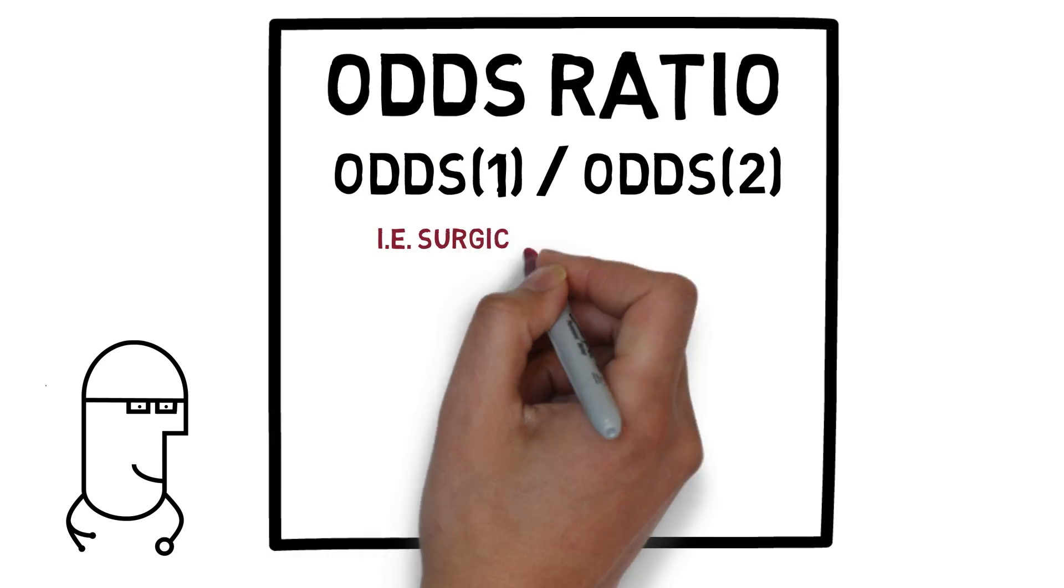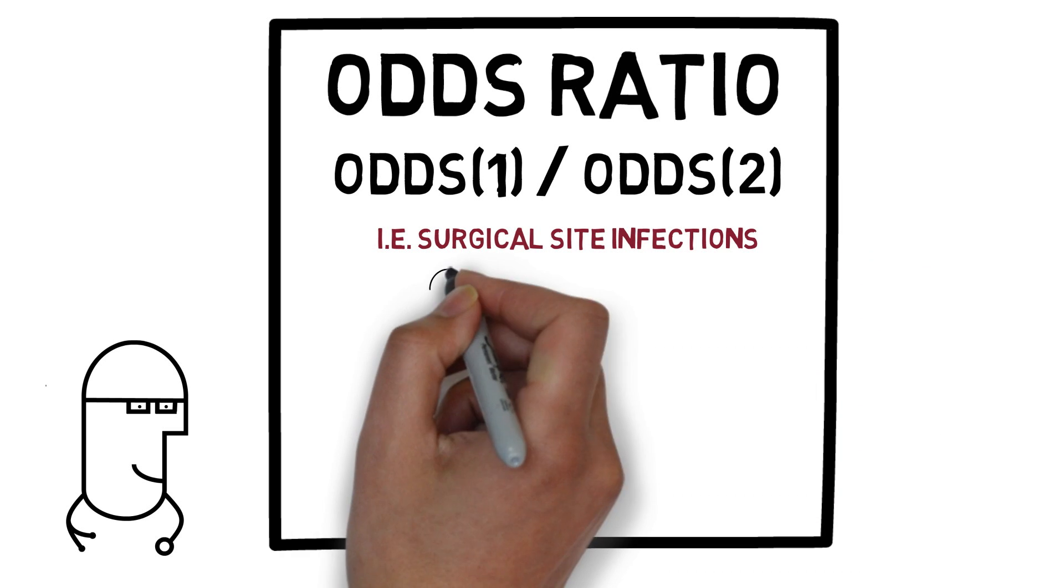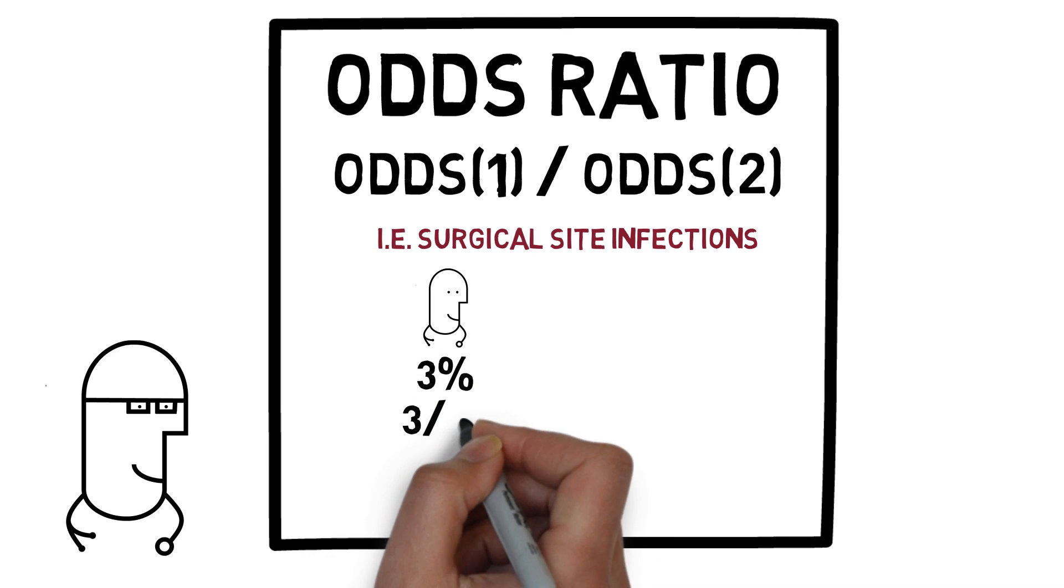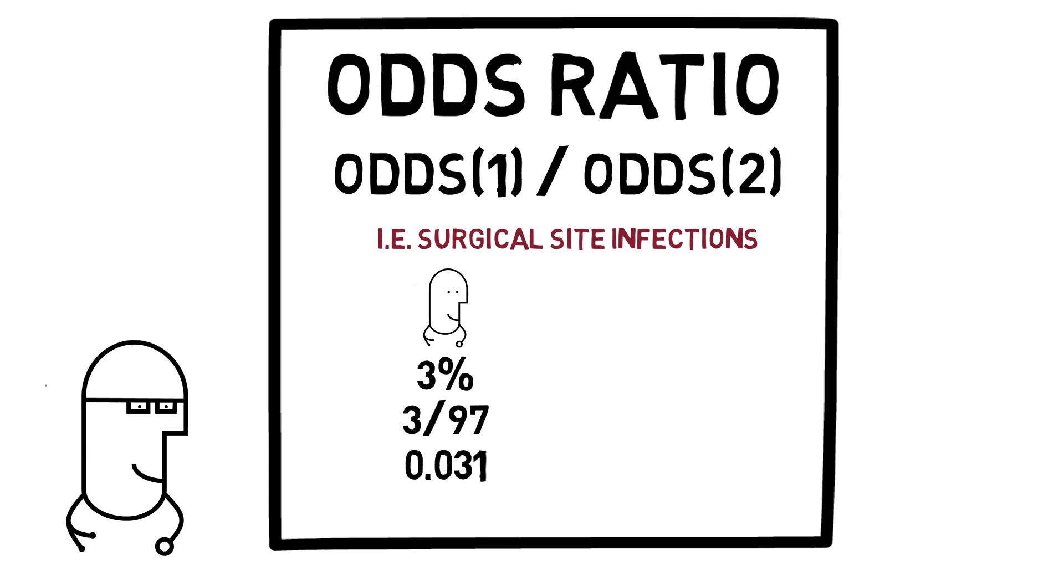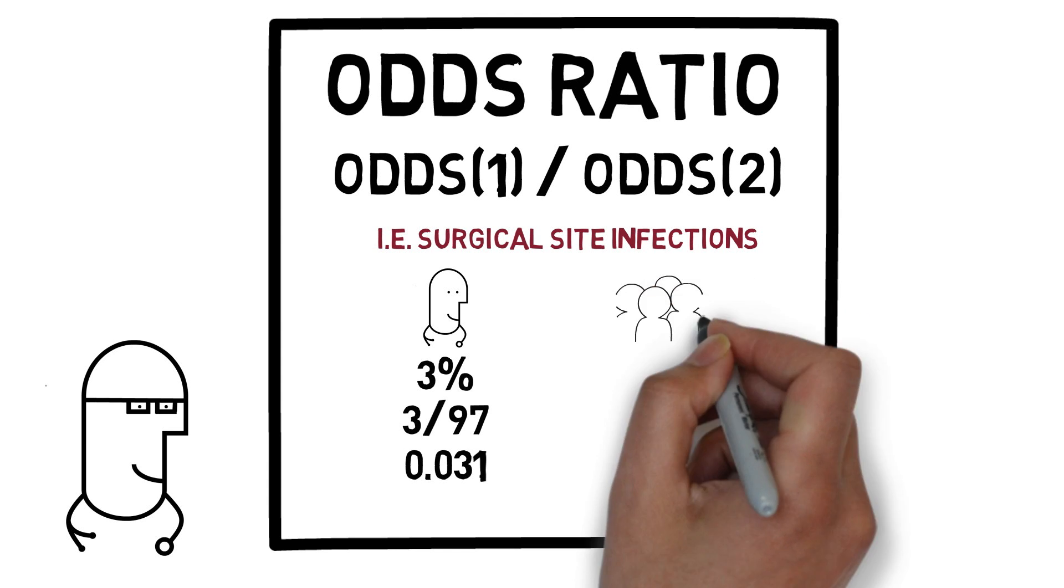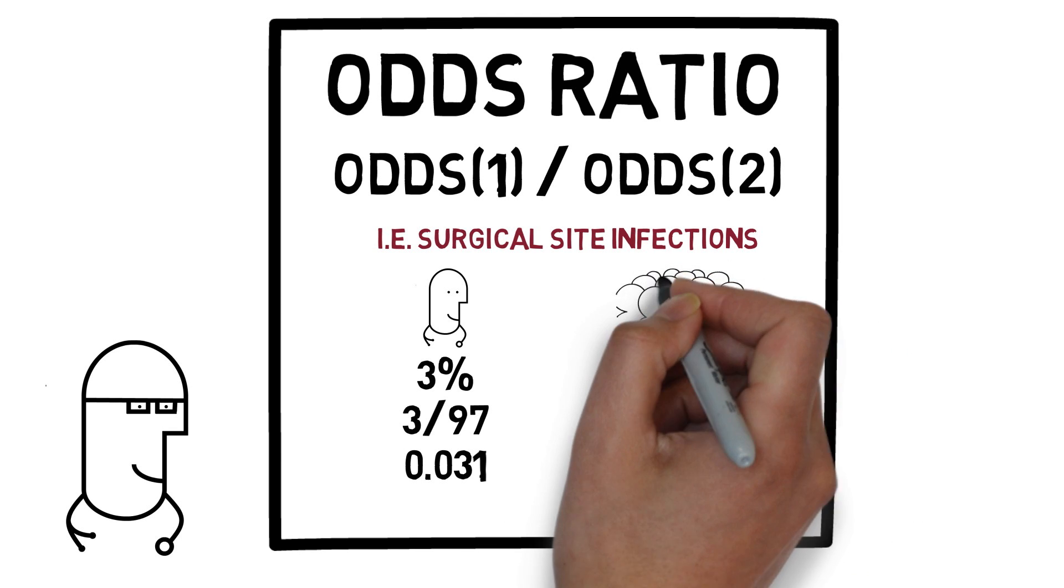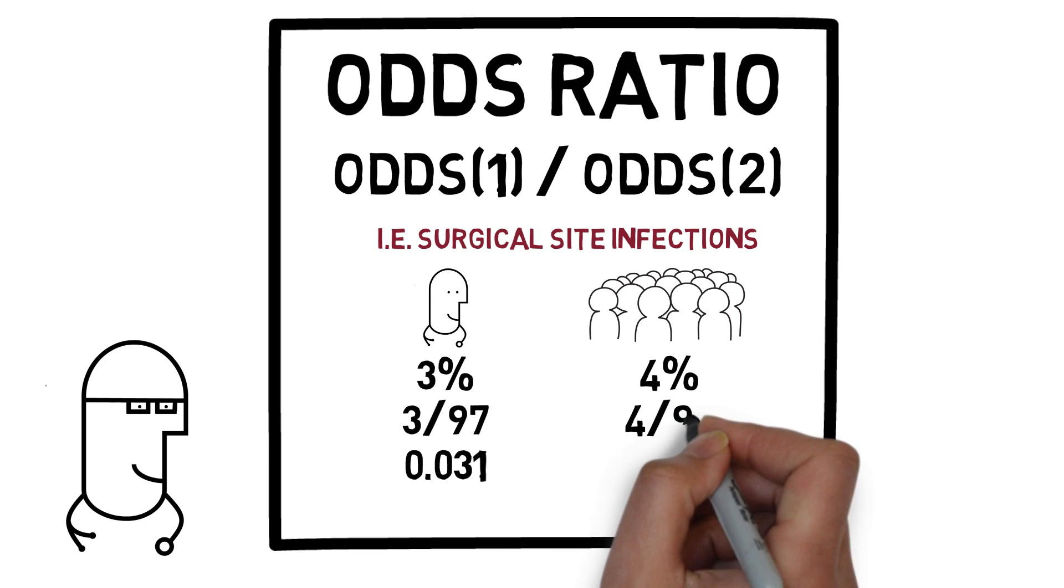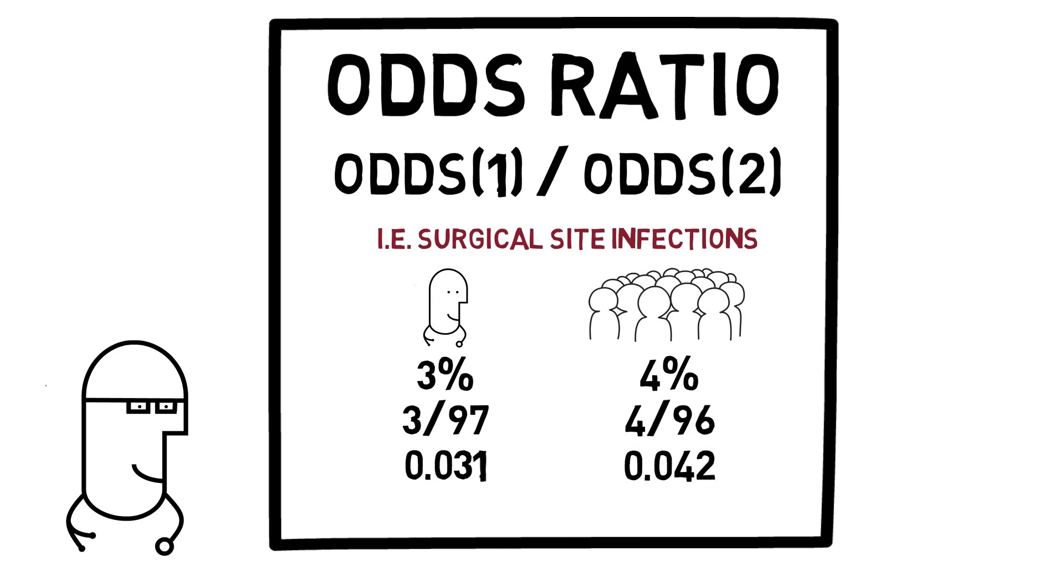Let's say, for example, we were interested in surgical site infections. If your rate of surgical site infections was 3%, for every 3 patients with a surgical site infection, there would be 97 patients without, making your odds of surgical site infections 0.031. Now let's imagine that your peer group that you're being compared to has a surgical site infection rate of 4%. For every 4 patients with a surgical site infection, there are 96 patients without, making their odds of getting a surgical site infection 0.042.